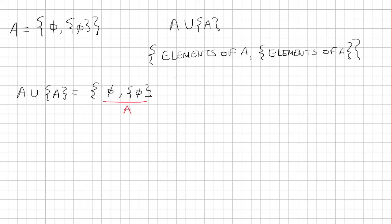So this is set A. And then, comma, you're just going to rewrite A again, but you're going to put a curly brace around it.